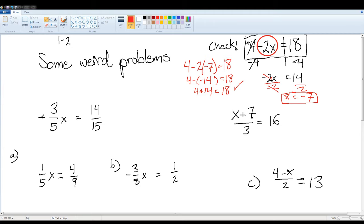Well, you have two ways of doing it. You could divide by negative three-fifths. That's going to get a little tough. Let's look at that. I would write, maybe divide by negative three-fifths, and here I would divide by negative three-fifths.